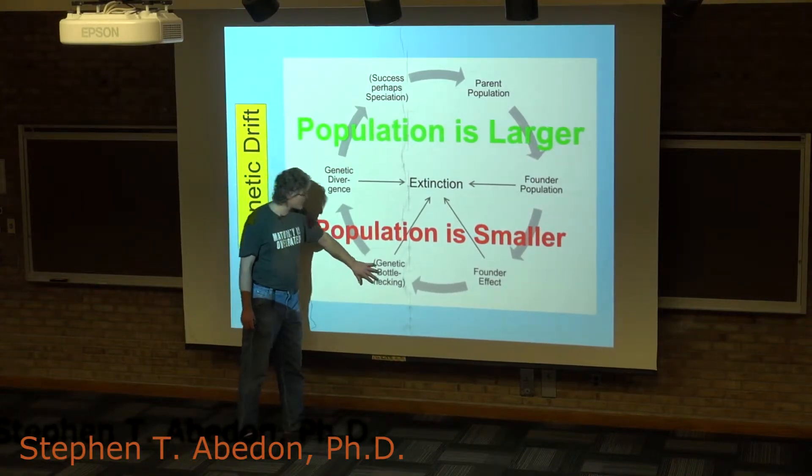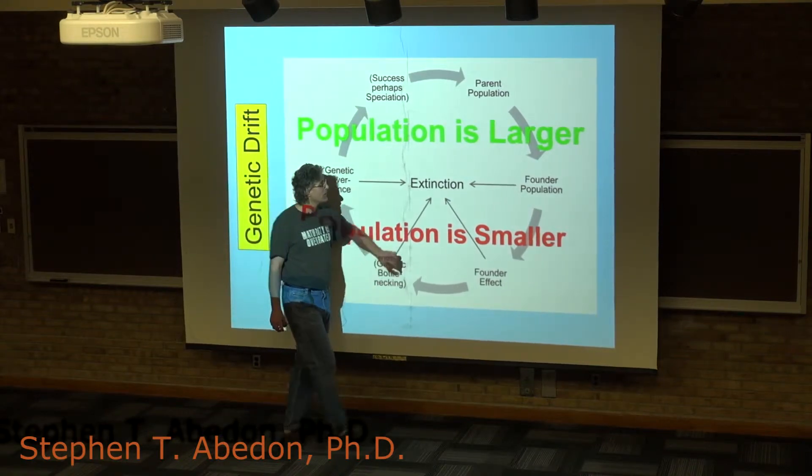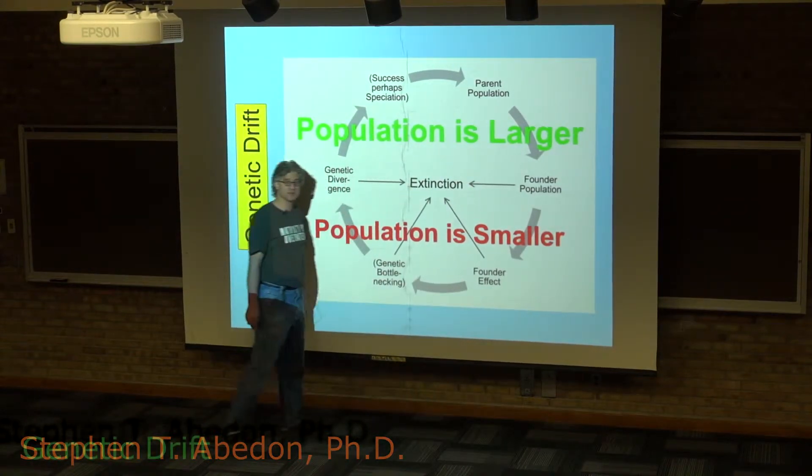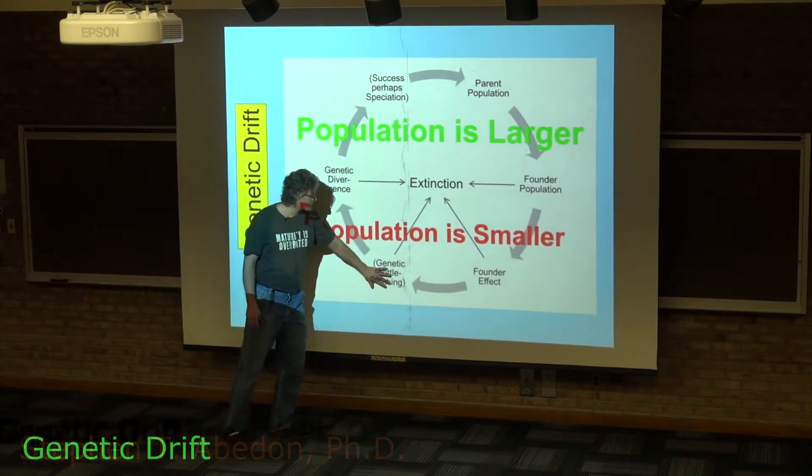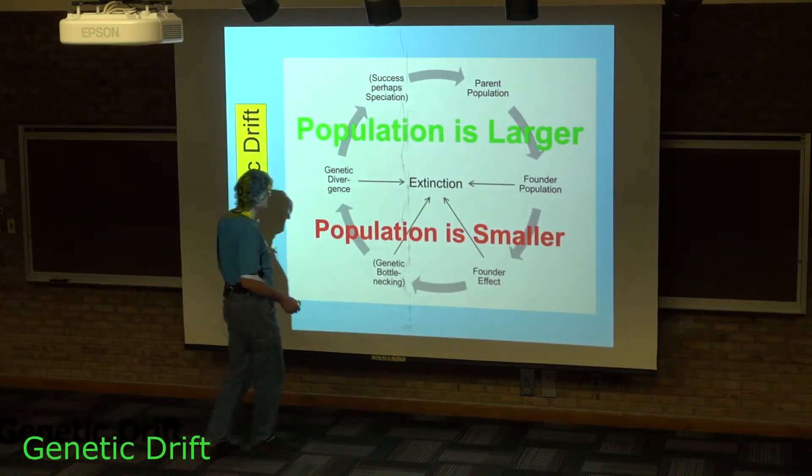This actually has the effect, as we'll get to when we talk about speciation, of causing this population to diverge genetically from this population. It becomes different. At this point, it's simply as a consequence of random changes that are becoming fixed within the population.